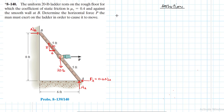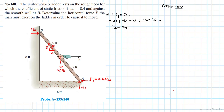Applying the equations of equilibrium: summation of forces in the Y direction gives us −20 + NA = 0, therefore NA = 20 pounds. Now we can find FA: FA = 0.4 × NA = 0.4 × 20 = 8 pounds.